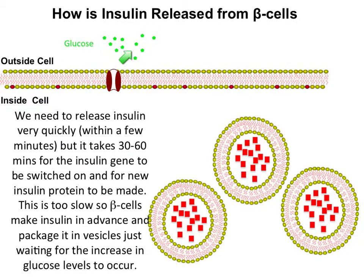When glucose levels increase we need a really rapid release of insulin so that we don't get a buildup of glucose in our bloodstream for too long. We need, within a few minutes, a large amount of insulin to be released. However, thinking back to gene expression — since insulin is a protein-based hormone — it actually takes about half an hour to an hour to switch on the insulin gene and produce more of this insulin protein. This is much too slow for the action we need to reduce glucose in the bloodstream.